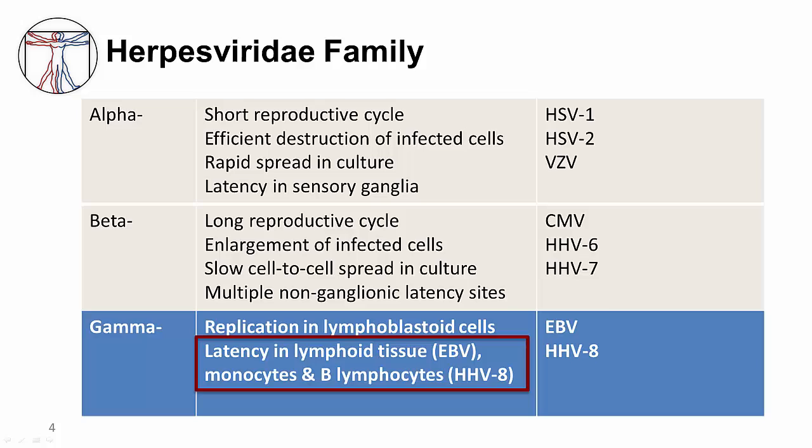EBV first infects epithelial cells in the oropharynx, where it replicates and can then infect B cells by binding to the CD21 receptor on the B cell surface, resulting in internalization of the virus. Either EBV causes an infected cell to enter a lytic phase, in which new virions are produced, or a latent phase, transforming it into a cell with potentially unlimited growth potential.